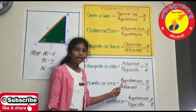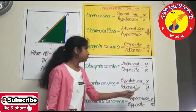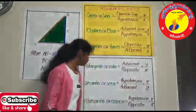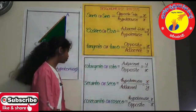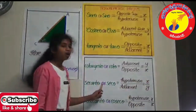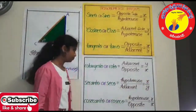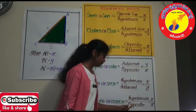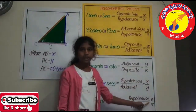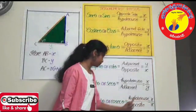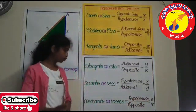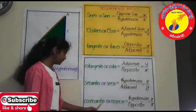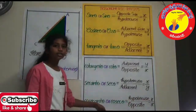Hypotenuse by adjacent side, that is R by Y — this ratio we call secant theta or sec theta. Hypotenuse by opposite side, that is R by X — this ratio we call cosecant theta or cosec theta.